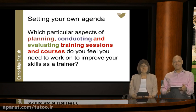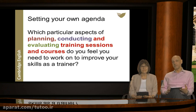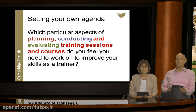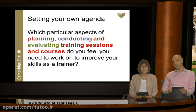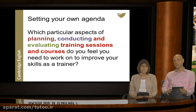Up to now we've just been looking at the summary descriptors for planning, conducting, and evaluating training sessions and courses, but there are also more detailed descriptors for each category. Trainers can use these to be more specific when evaluating their current position and to be clearer about where they can continue to develop. There are three distinct sections in the summary description — planning, conducting, and evaluating training sessions and courses — and within these subcategories there are detailed descriptors.